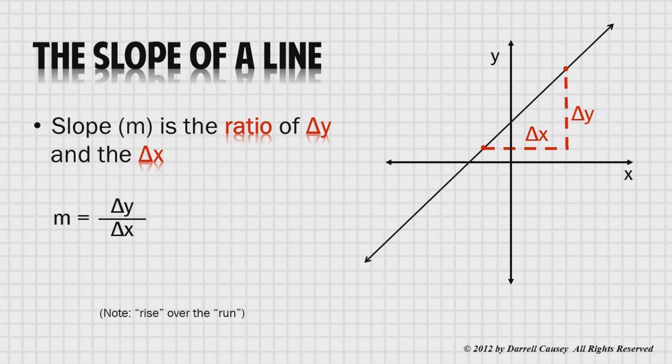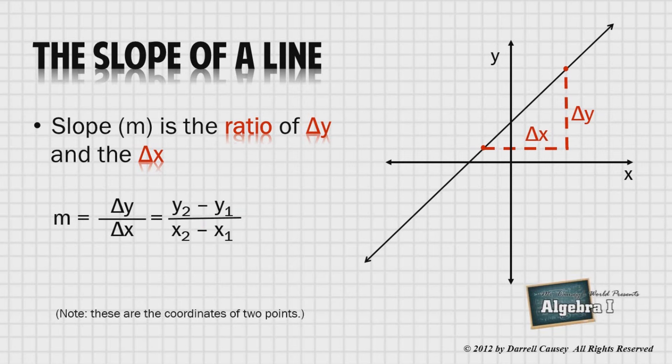So, learn what slope actually means, and remember that change means you are going to have a difference. That is, delta y means y sub 2 minus y sub 1, and delta x means x sub 2 minus x sub 1. All this is, is the ratio of the distances between the coordinates of the points. But, it has many uses in the mathematical and scientific worlds.